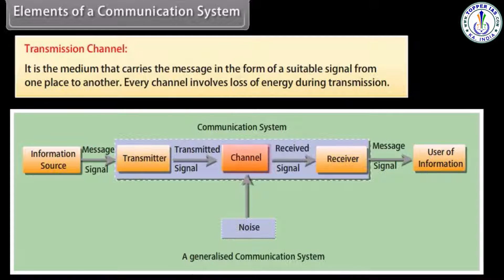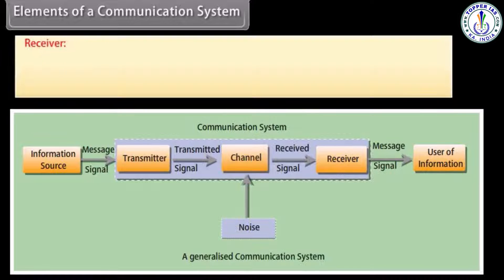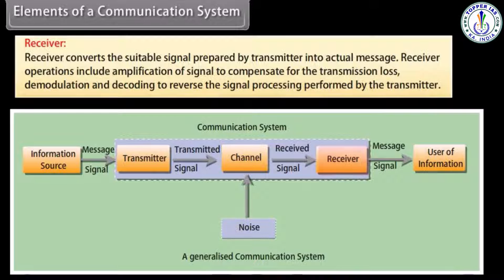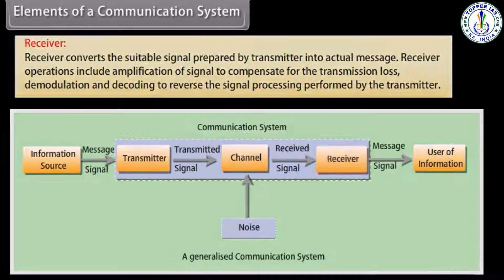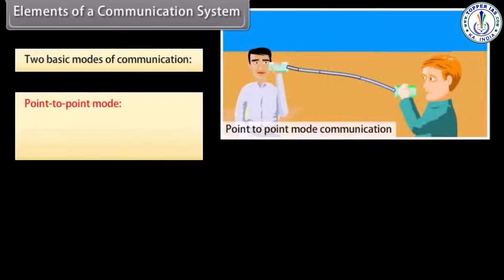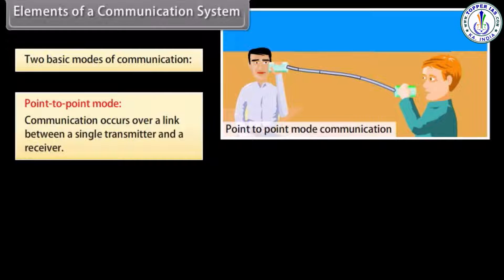Every channel involves loss of energy during transmission. A receiver converts the suitable signal prepared by the transmitter into the actual message. Receiver operations include amplification of signal to compensate for transmission loss, demodulation, and decoding to reverse the signal processing performed by the transmitter. Two basic modes of communication: point-to-point mode, where communication occurs over a link between a single transmitter and a receiver.